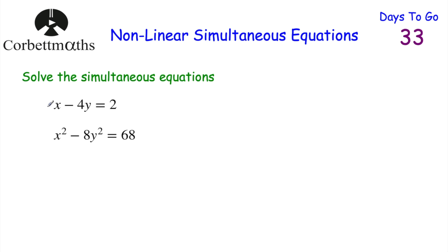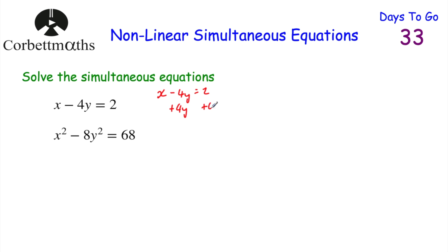Making x the subject is the best approach here. So from x minus 4y equals 2, we add 4y to both sides to get x equals 2 plus 4y. We've made x the subject of the first equation; now we substitute that into the second equation. Instead of x squared, we have 2 plus 4y, so it becomes (2 plus 4y) squared minus 8y squared equals 68.